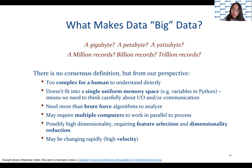Feature selection is the process where you automatically or manually select those features which contribute most to your prediction variable or output of interest. Dimensionality reduction is the process of reducing the number of random variables under consideration by obtaining a set of principal variables.